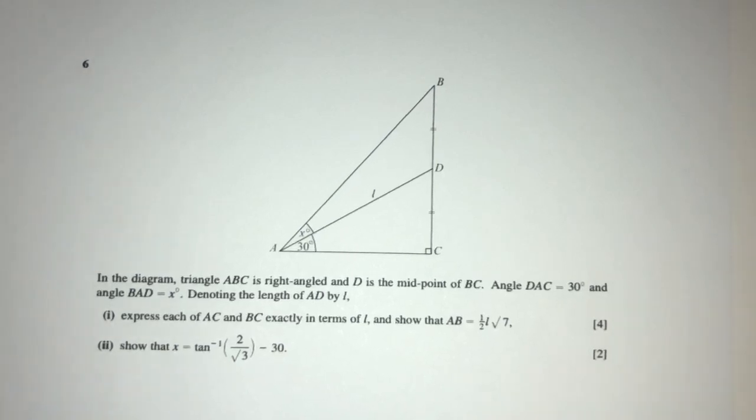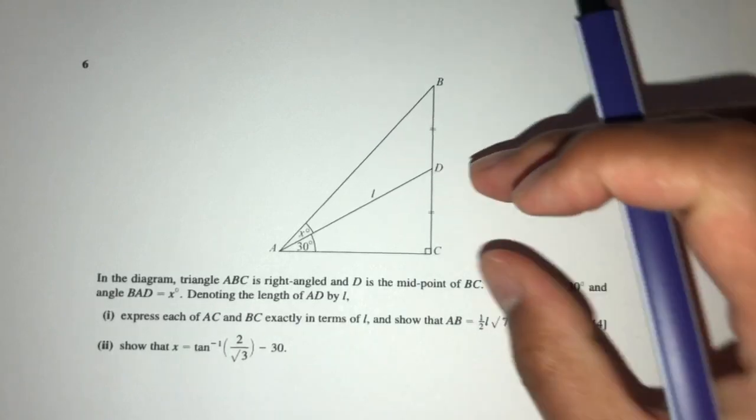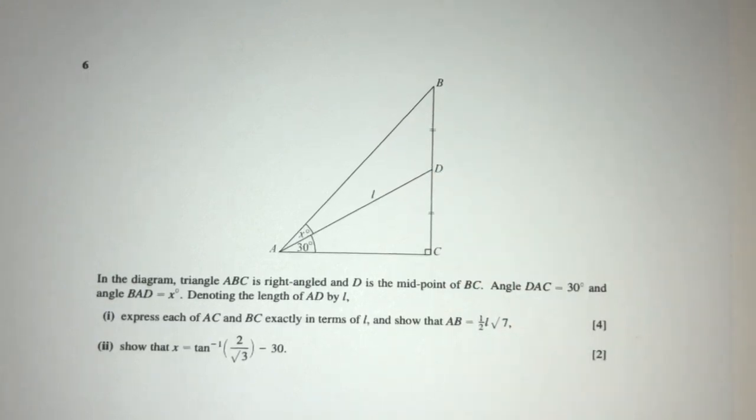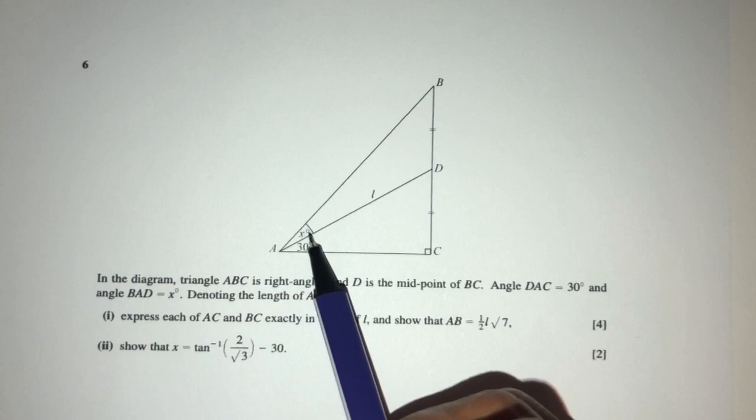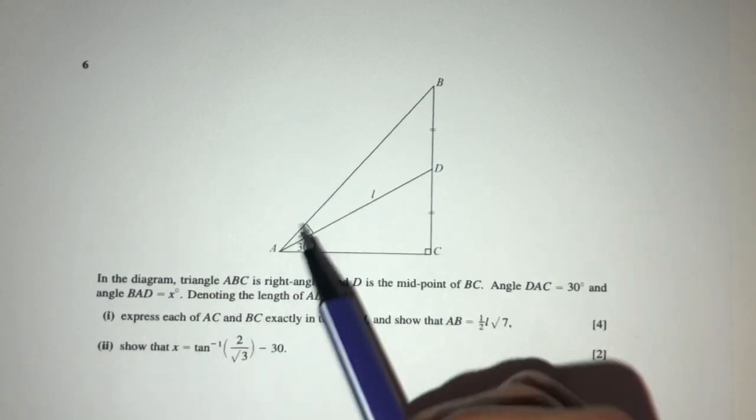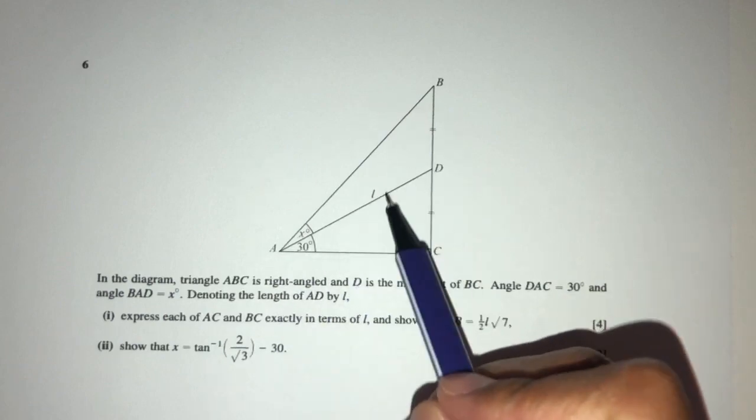In this diagram we have triangle ABC, which is a right-angled triangle as we can see clearly on the diagram. Now D is the midpoint of BC, so D is right here. This is half and half because it is the midpoint of BC. The angle DAC is 30 degrees and the angle BAD is x.